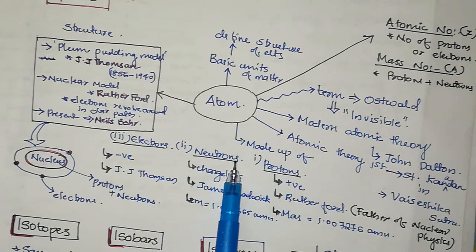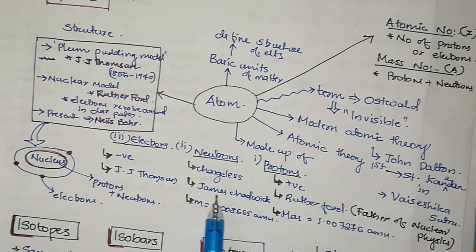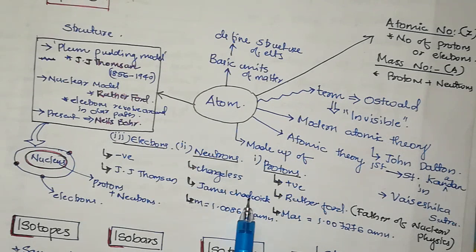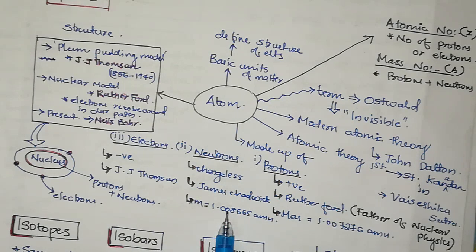Neutrons are chargeless particles. Neutron is discovered by James Chadwick.